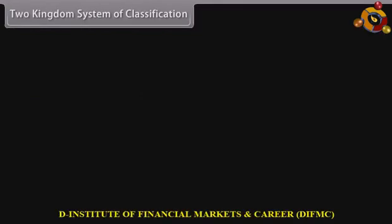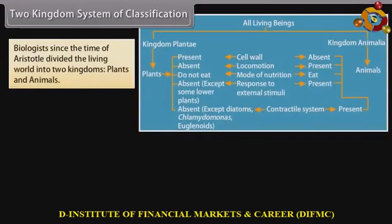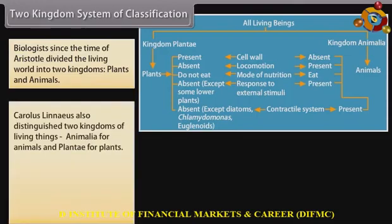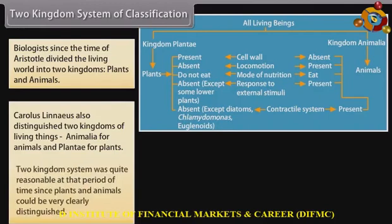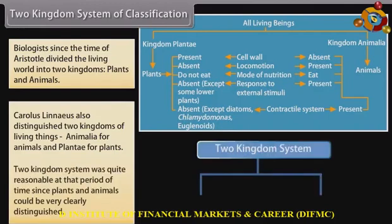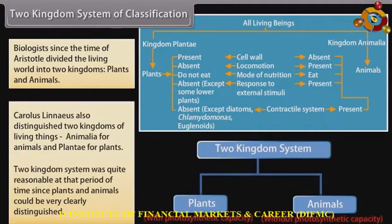Two Kingdom System of Classification: Biologists since the time of Aristotle divided the living world into two kingdoms — plants and animals. Carolus Linnaeus also distinguished two kingdoms of living things: Animalia for animals and Plantae for plants. The two kingdom system was quite reasonable at that period of time since plants and animals could be very clearly distinguished.